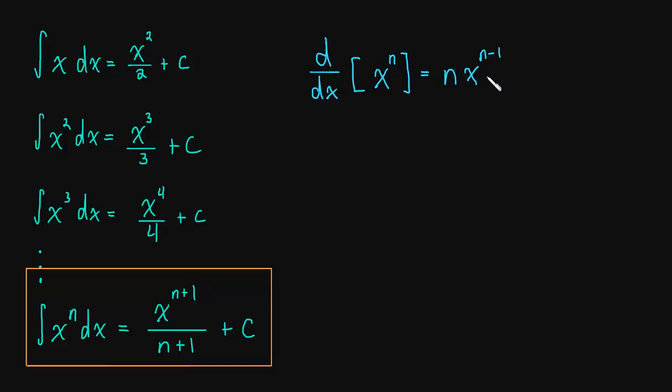So to undo this, we have to add 1 to the exponent. That's this step. And then divide by that new exponent.